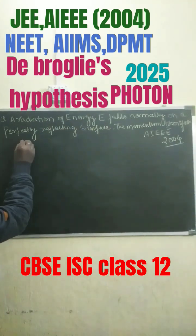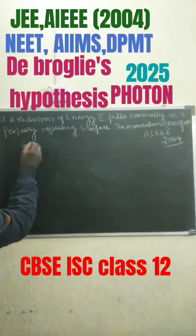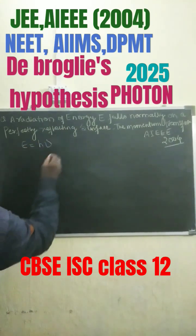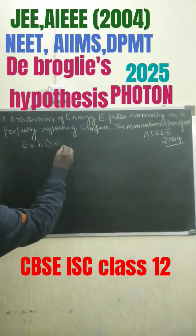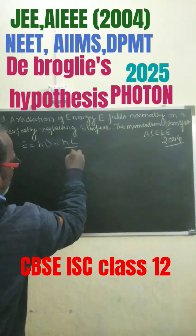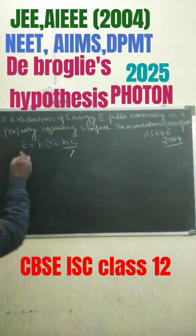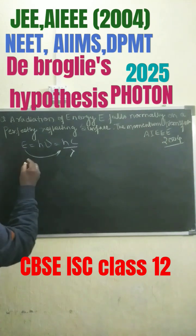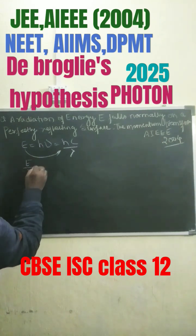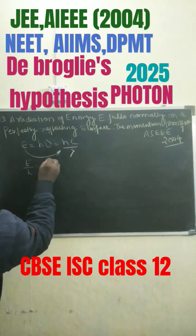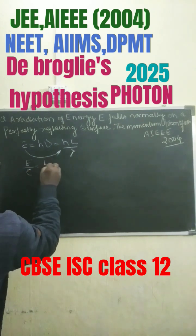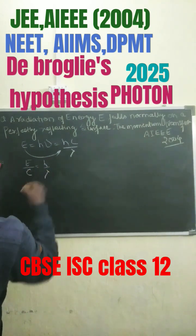The energy of a photon can be written as E equals hν, which is also equals to hc by lambda. From here, we can write down E by H is equals to E by C is equals to H by lambda.